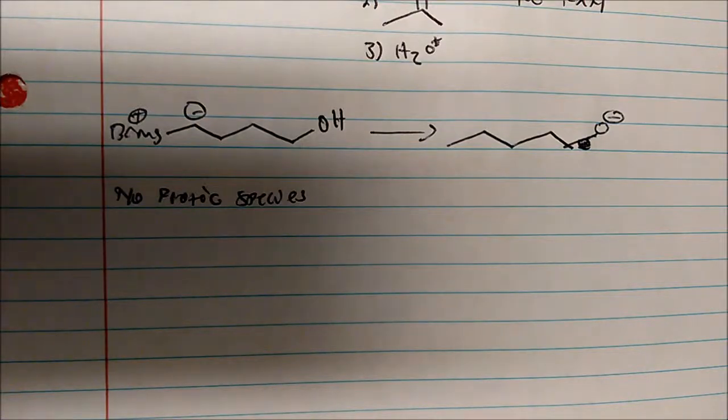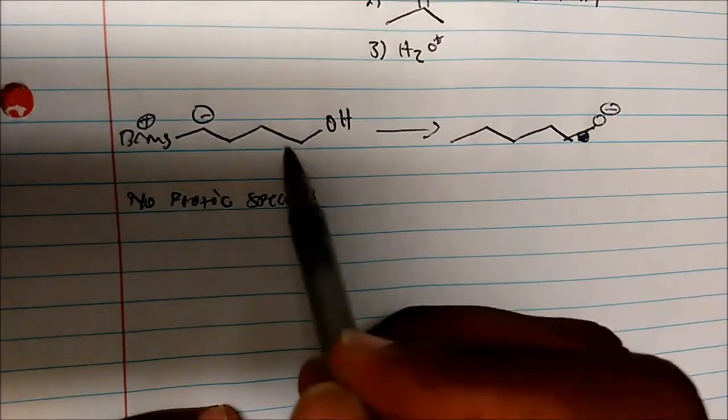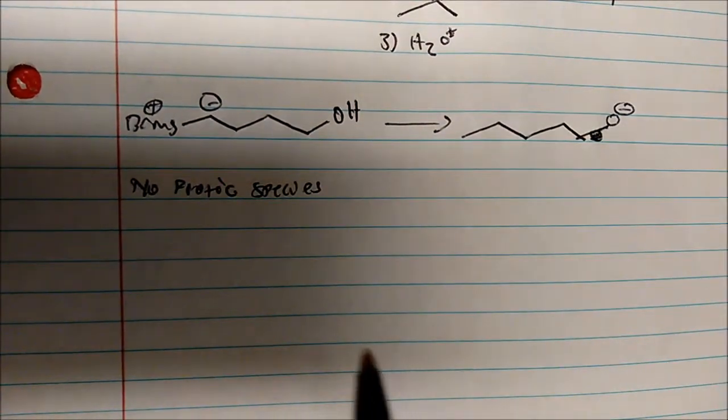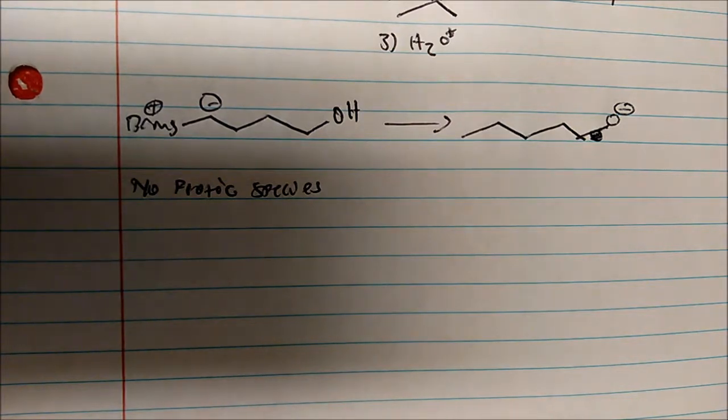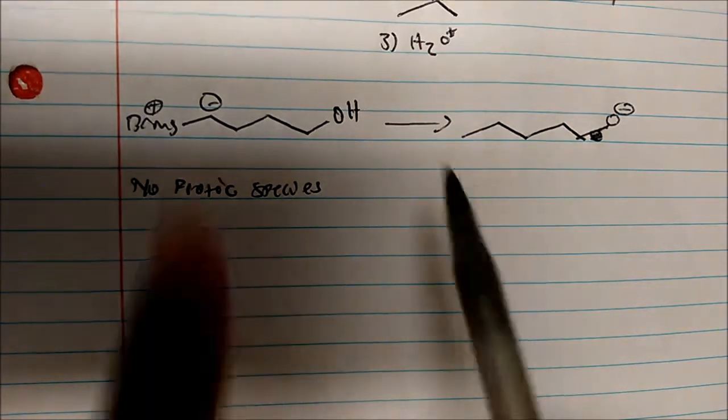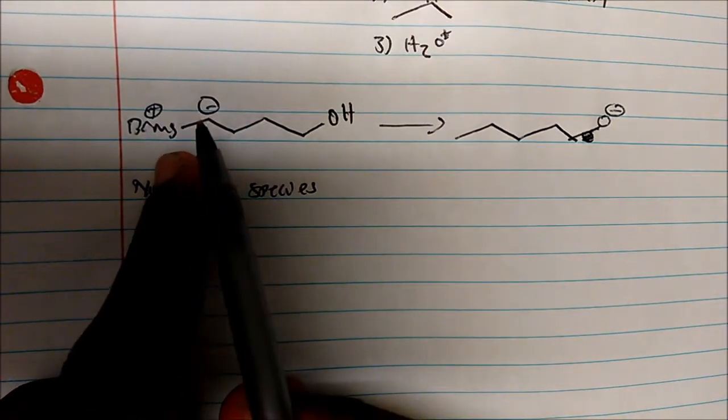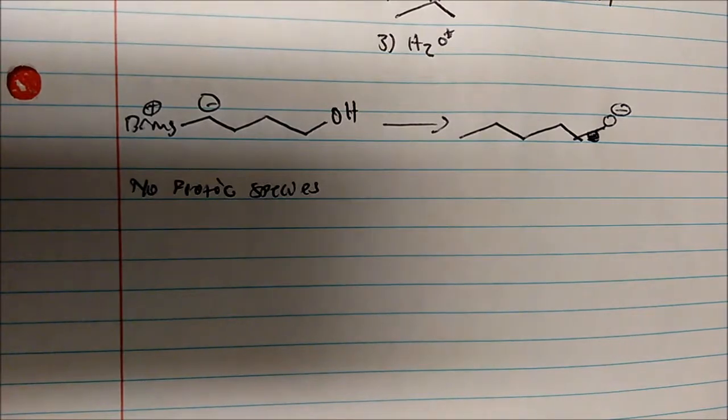Welcome to part two of this video. Remember when you were trying to synthesize some general reaction using the Grignard process and we ended up with a protic species within our magnesium bromide compound? That's not good - no protic species.